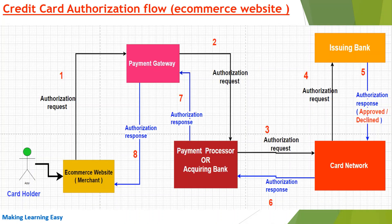This diagram shows the authorization flow in an e-commerce website. You can see five boxes, each box representing a party — so we have five parties involved in the authorization process. The black arrows numbered one through four represent the authorization request.